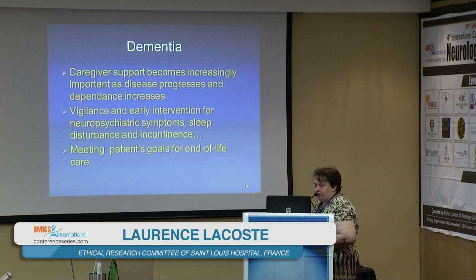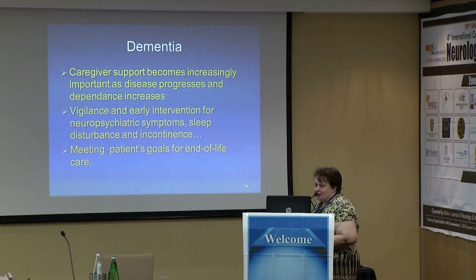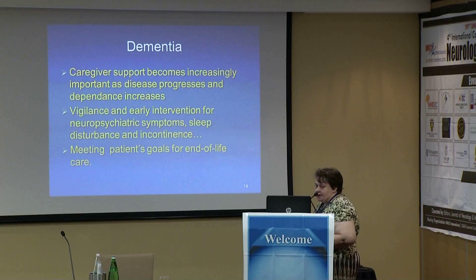Then, for patients with dementia: tests are altered and autonomy is altered too. Caregiver support becomes increasingly important as disease progresses and dependence increases. Vigilance and early intervention for neuropsychiatric symptoms, sleep disturbance, and incontinence are needed, as well as meeting the patient's goals for end-of-life care.